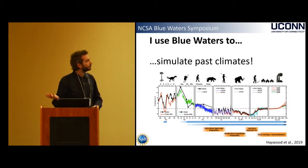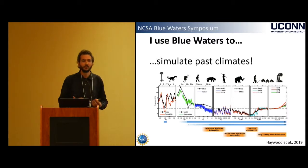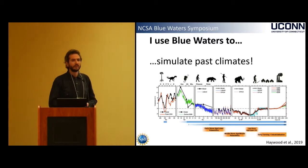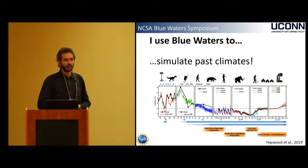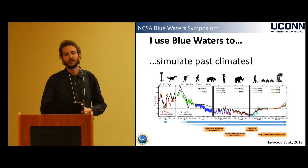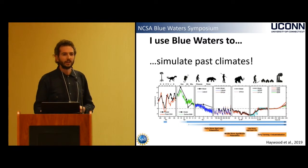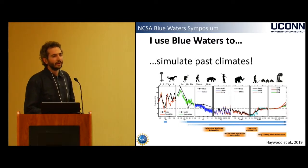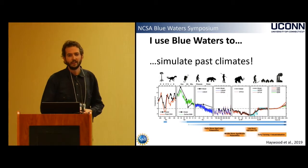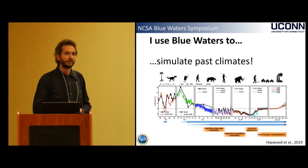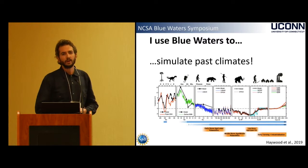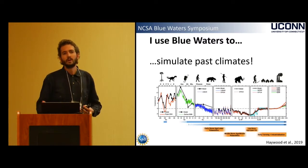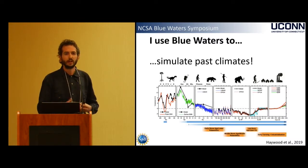We use Blue Waters to simulate past climates. Why do we even care about simulating past climates? We are now emitting anthropogenic greenhouse gases and aerosols that are rapidly changing our climate, and in the next century to millennia we may be in a very different climate state. A lot of the climate models are set up and do well in present-day climate states, but there are parameterizations that we're not sure how well they'll perform under a very different future climate state.